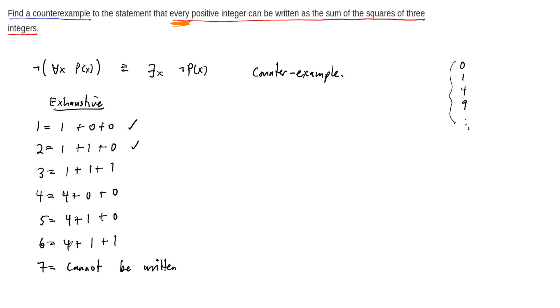We could get eight, by the way, four plus four plus zero, but that's too big as well, right? So this cannot be written as a sum of three squares.